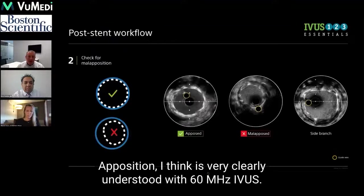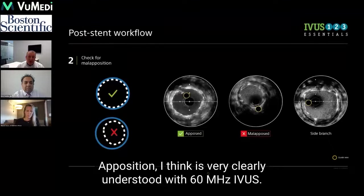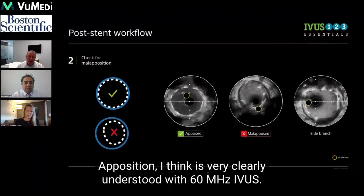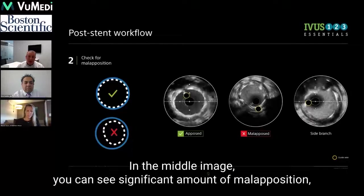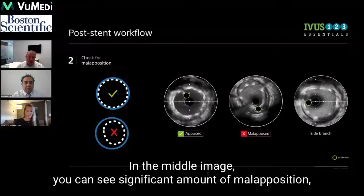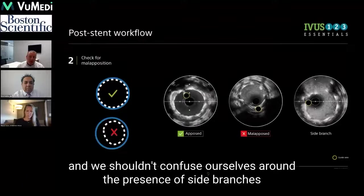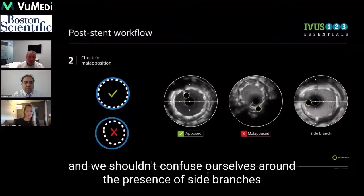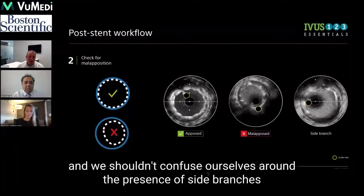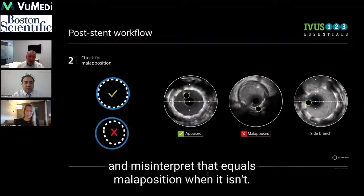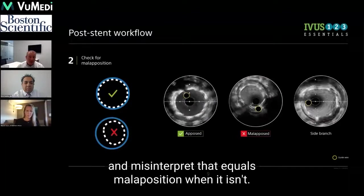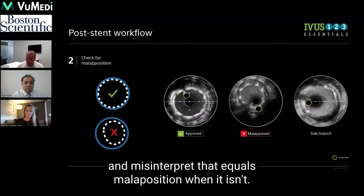Apposition is very clearly understood with 60 megahertz IVUS. In the middle image, you can see significant malapposition, and we shouldn't confuse ourselves around the presence of side branches and misinterpret that that equals malapposition when it isn't.